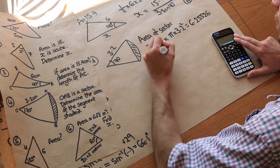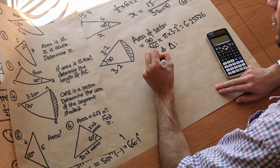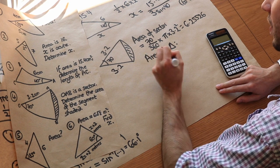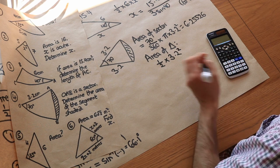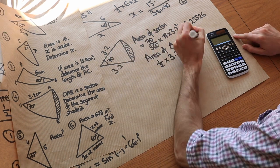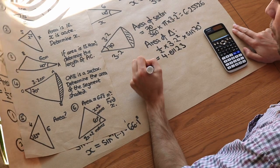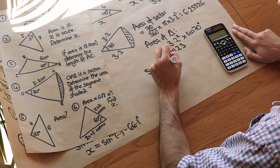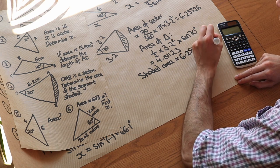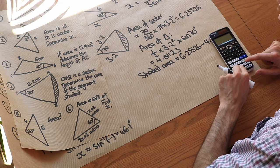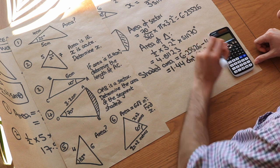Since both sides of the triangle are radii, they're both 3.2. The triangle area is half times 3.2 squared times sine 70 degrees, giving 4.81123. Therefore the shaded segment area is 6.25526 minus 4.81123, which equals 1.44 centimetres squared to three significant figures.